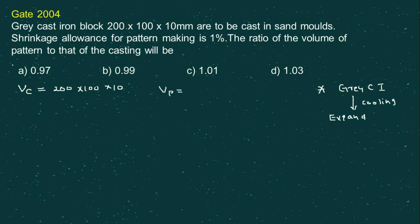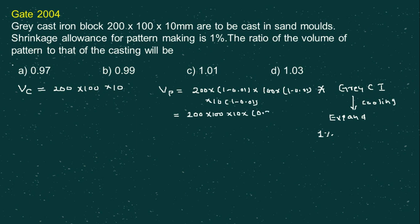The shrinkage allowance given is 1%. This means whatever the volume of the casting is, we consider 1% less. So in all directions, the pattern dimensions become: 200 × (1 − 0.01), multiplied by 100 × (1 − 0.01), multiplied by 10 × (1 − 0.01). That is, the pattern volume equals 200 × 100 × 10 multiplied by 0.99 three times.